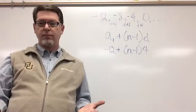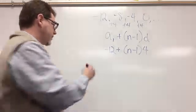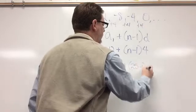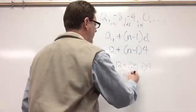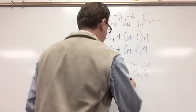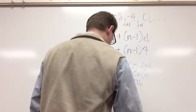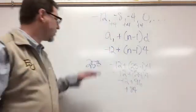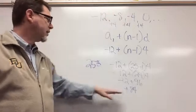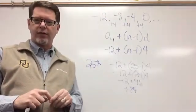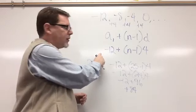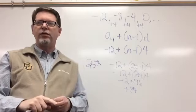Now let's find the 25th term in this sequence. The 25th term: negative 12 plus 25 minus one times four. That's negative 12 plus 24 times four. 24 times four is 96, and negative 12 plus 96 is positive 84. So the 25th term in this sequence is 84. If I just kept adding four all the way down, the 25th term would be 84.